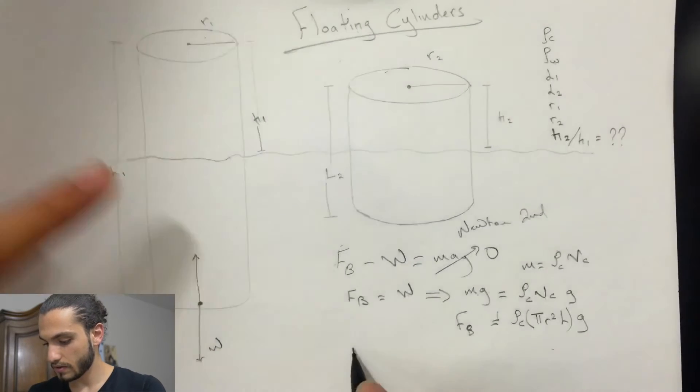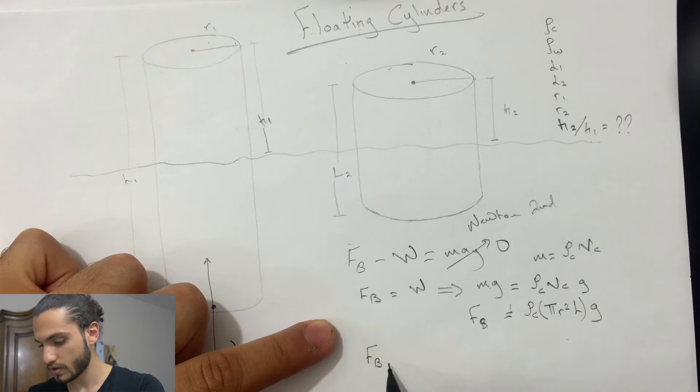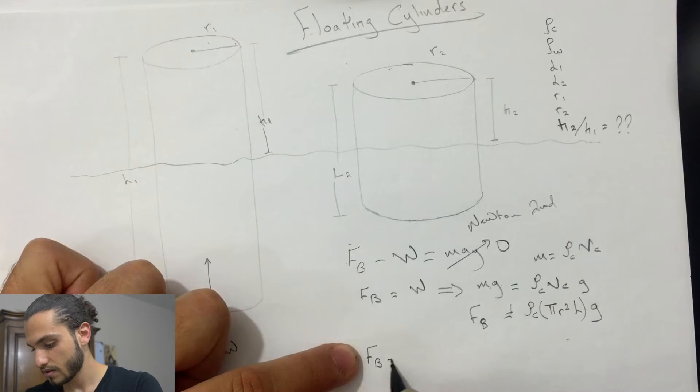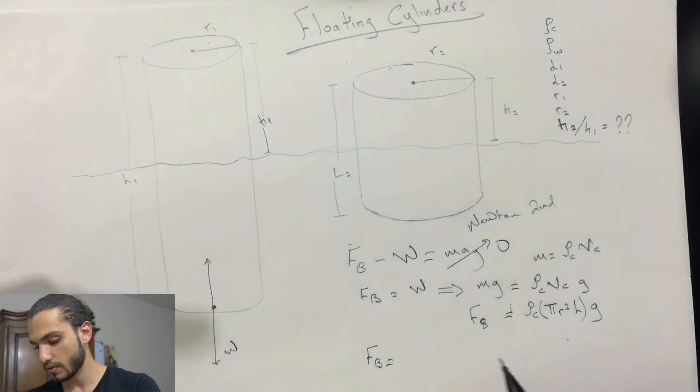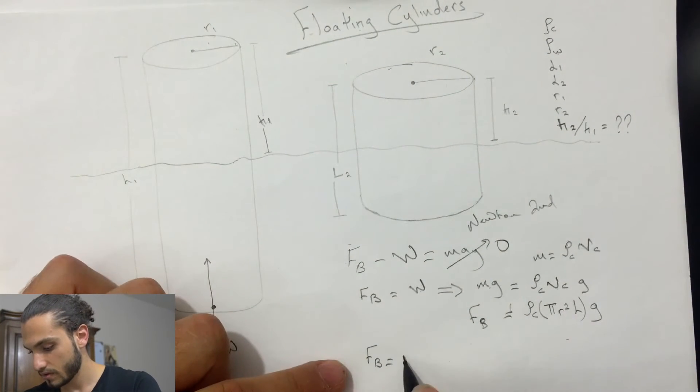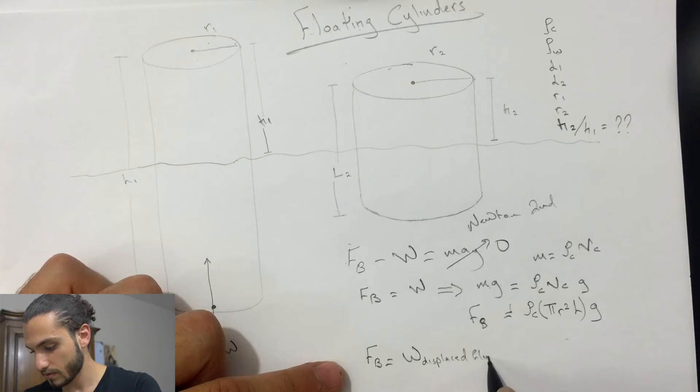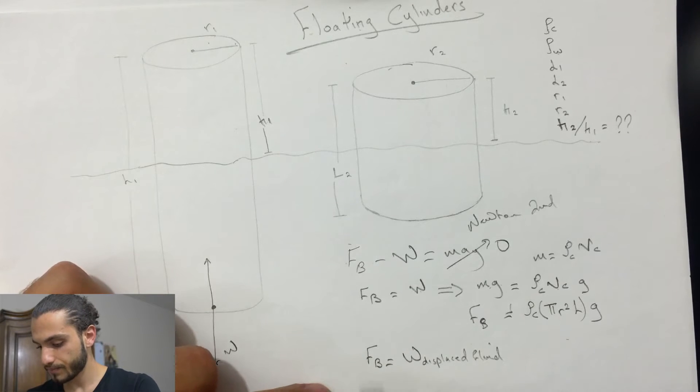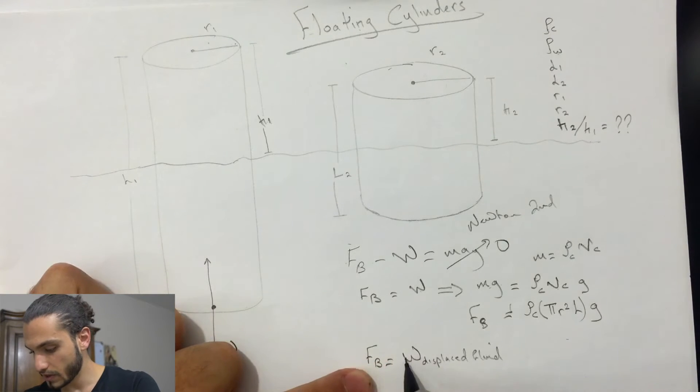So this is the buoyant force from this. And then there is the buoyant force according to Archimedes, which is equal to the weight of the displaced fluid.